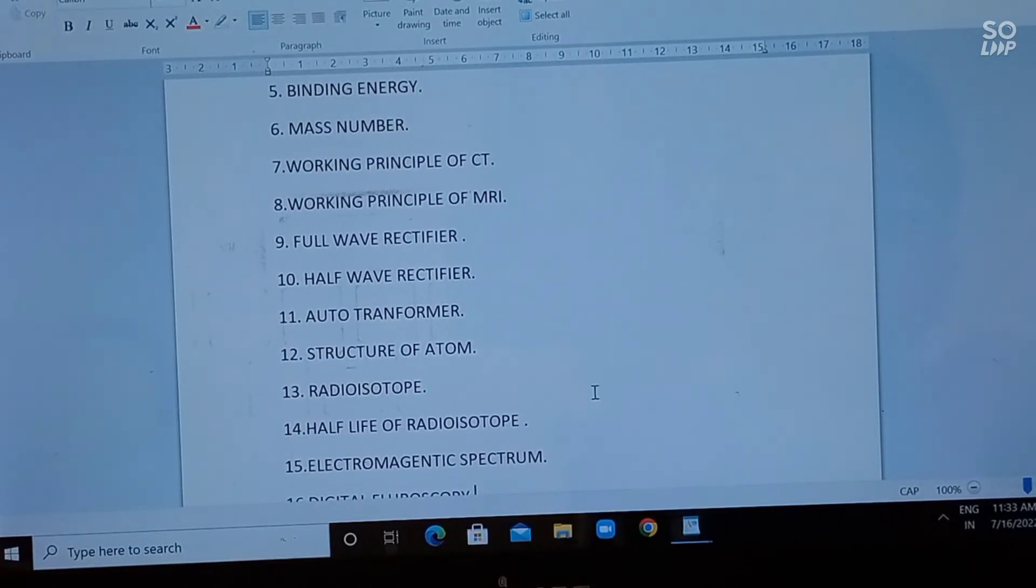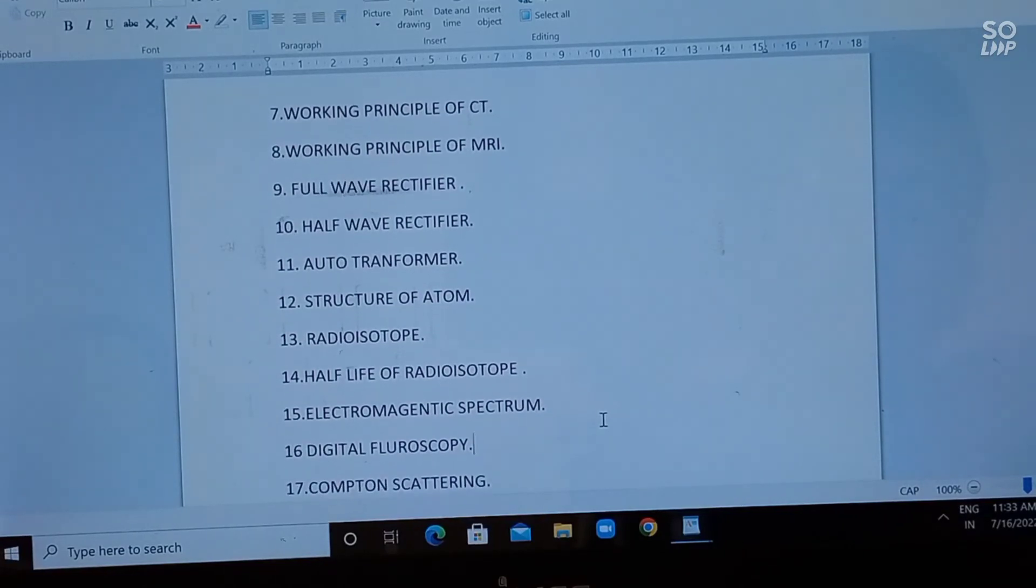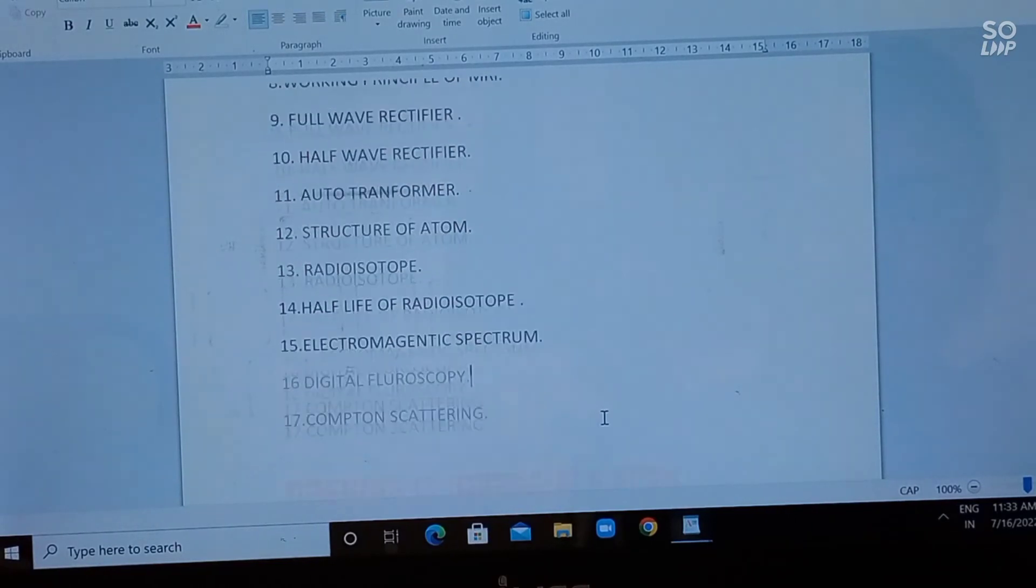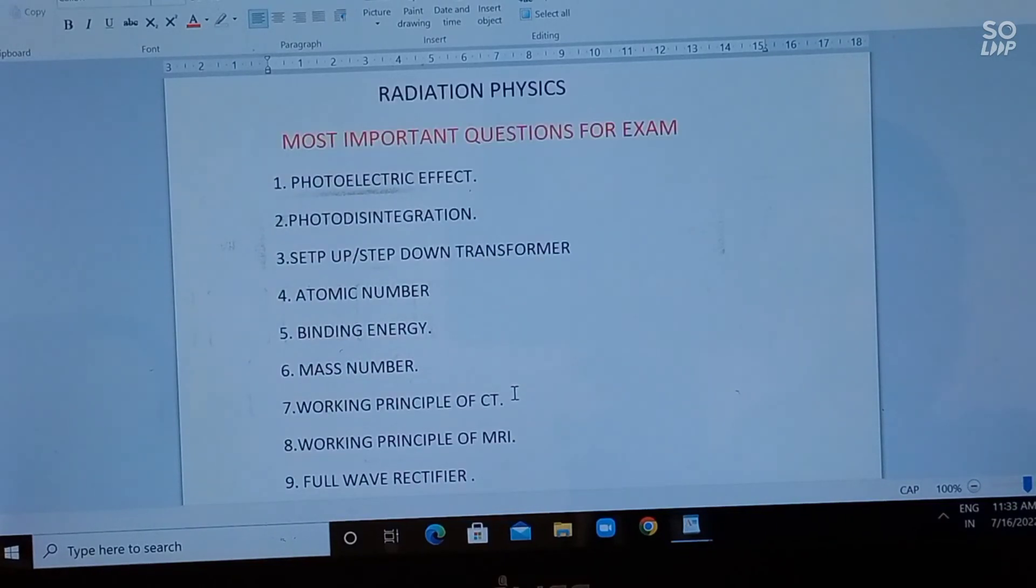Question 15 is electromagnetic spectrum, also most important. Question 16 is fluoroscopy - here you have to explain what is digital fluoroscopy and merits and demerits of digital fluoroscopy. Question 17 is Compton scattering. These are the most important questions you have to read. 100% questions in examinations will be from these.